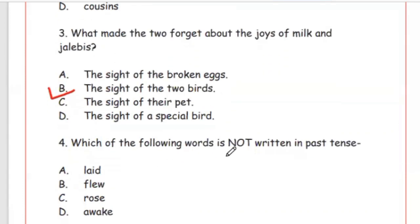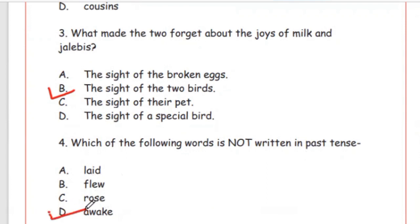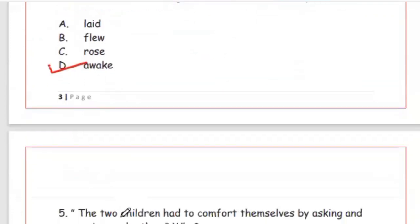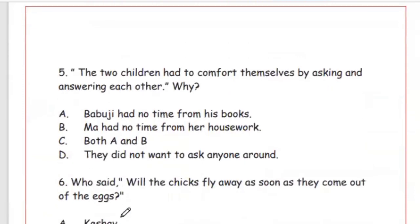Question 4: Which of the following words is not written in past tense? Options: laid, flew, rose, awake. The right answer is Option D, awake — because it is given in present tense. Pay careful attention to such questions.